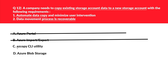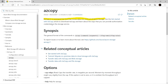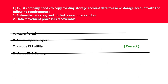Let's look at option C: AzCopy CLI utility. Since CLI is mentioned and AzCopy moves data into and out of Azure Storage, this is a potential answer. Option D, Azure Blob Storage, cannot help in automating data movement, so we reject it. Per official documentation, AzCopy is the command-line tool that moves data into and out of Azure Storage — we log this as the correct answer.